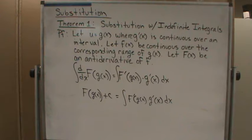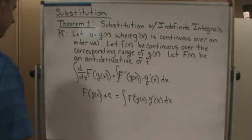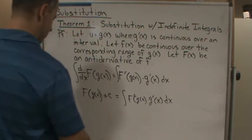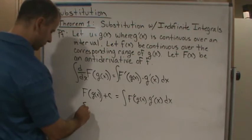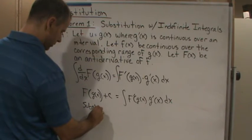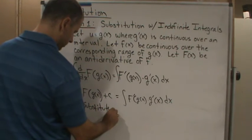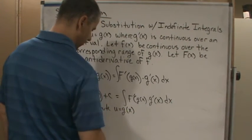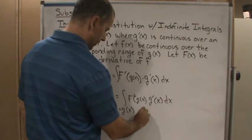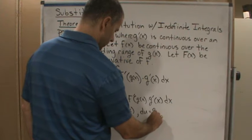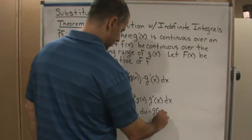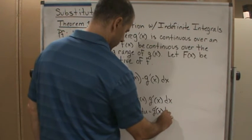Okay, now all we have to do is do our u substitution. So we're going to substitute in. So we're going to substitute u equals g of x and that means du equals g prime of x dx.